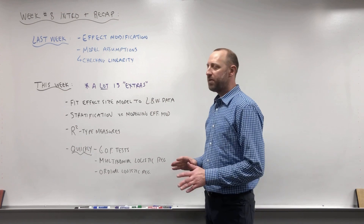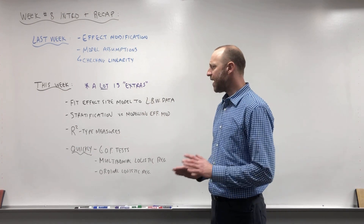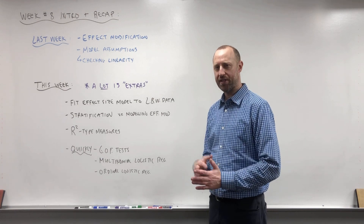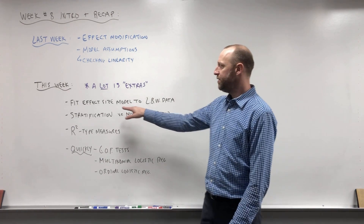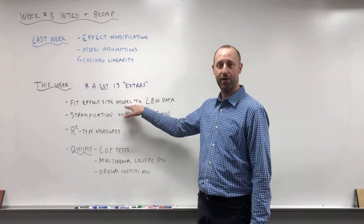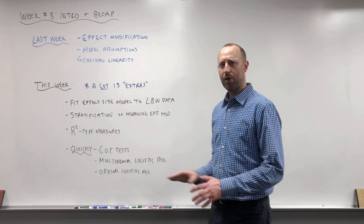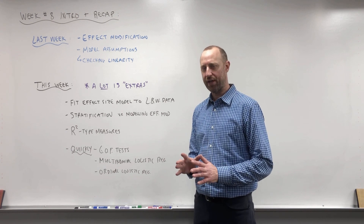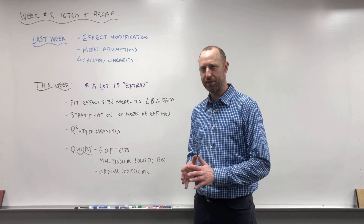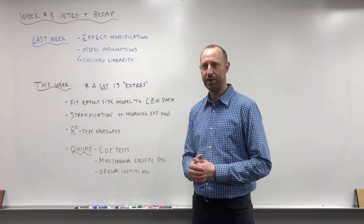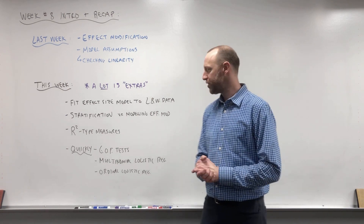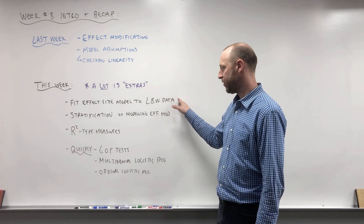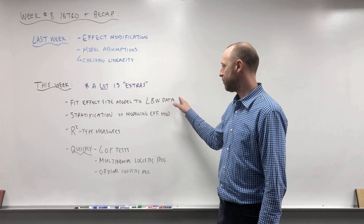This week is going to be a lot of little extras and odds and ends to tie up logistic regression. We're going to spend a good chunk of time fitting an effect size model to the low birth weight data. We won't recap the model building and variable selection criteria — we've covered that earlier in the course, so it might be a good idea to refresh on that material if needed. We're going to build a model to estimate the effect of smoking on the risk of low birth weight.